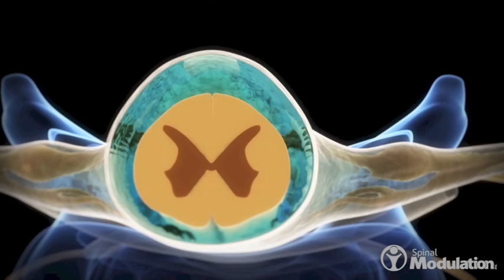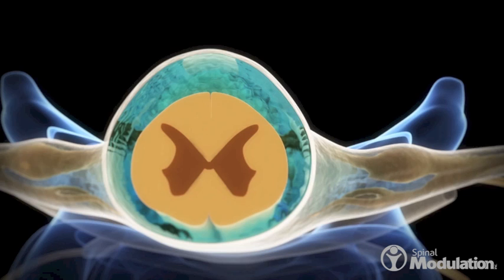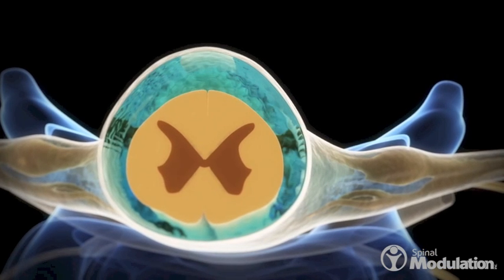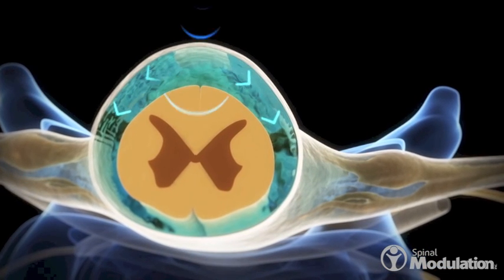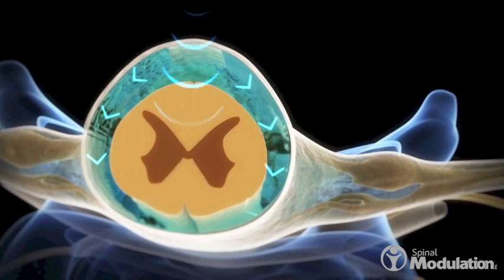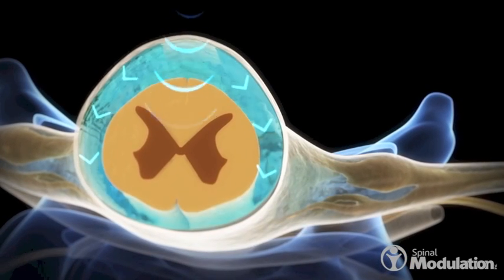Unlike the dorsal column, the DRG is surrounded by minimal cerebrospinal fluid, or CSF. CSF acts as an energy sink and can unintentionally distribute current to other neural structures, causing unwanted stimulation or motor activation.